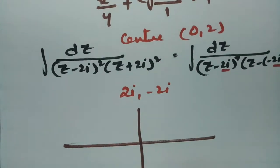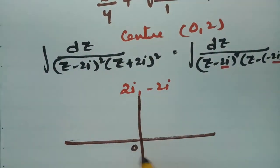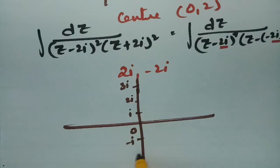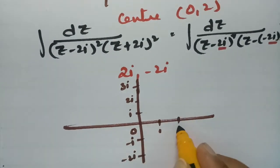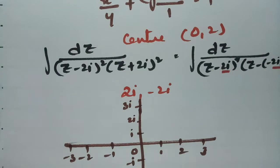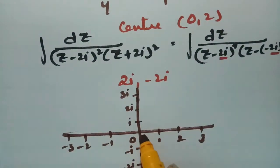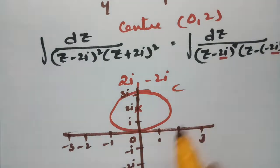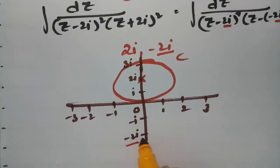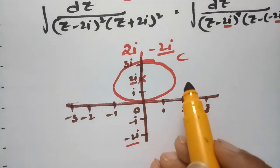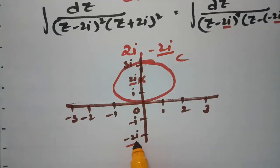We must check whether 2i and minus 2i lie within or outside the given contour c. Plotting the points: origin, i, 2i, 3i, minus i, minus 2i, and real axis values. The center is at (0, 2), so this defines the ellipse c. Minus 2i lies outside c, and plus 2i lies inside c. Cauchy's integral theorem is applicable only when the point is inside or on the contour c; if it is outside, it is not applicable.